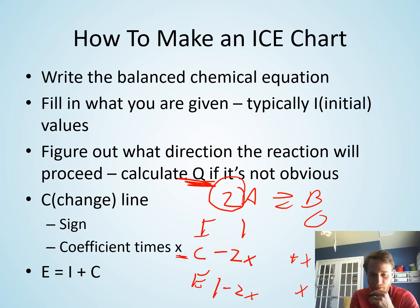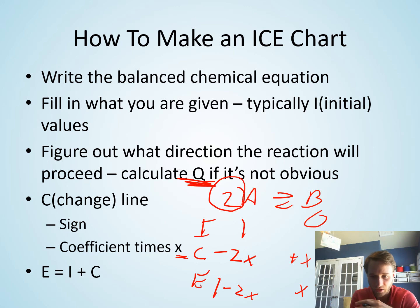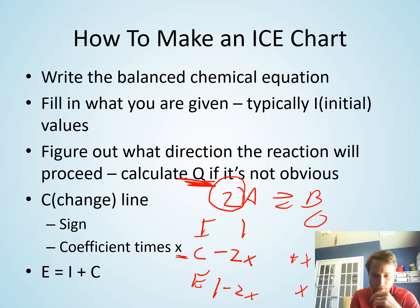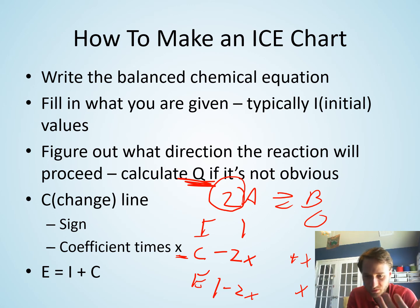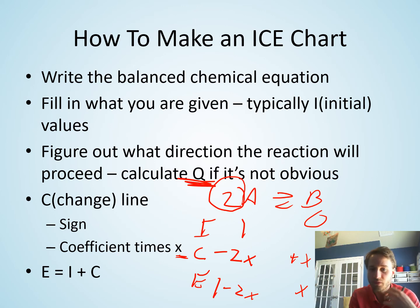We have to make sure we're subtracting on the reactant side and adding on the product side, or subtracting products and adding to reactants going in reverse. The equilibrium value is just the sum of the initial and the change. That's how we set up and create ICE tables, which are used for equilibrium problems. In class we do plenty of examples of these things so we get lots of practice with them.